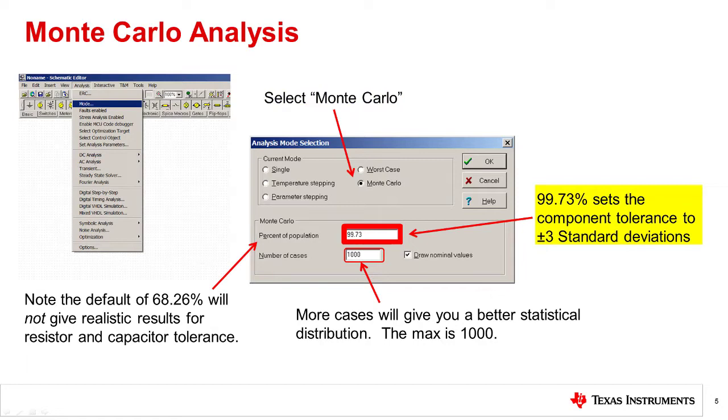For Percentage of Population, enter 99.73%. This sets the component tolerance to plus or minus three standard deviations for the Monte Carlo analysis.